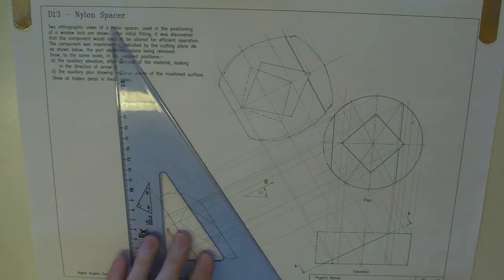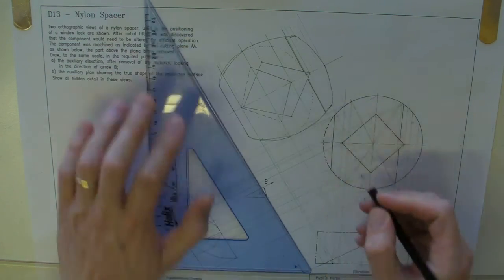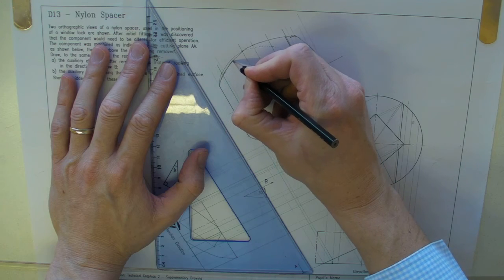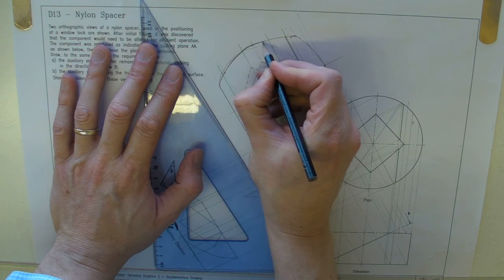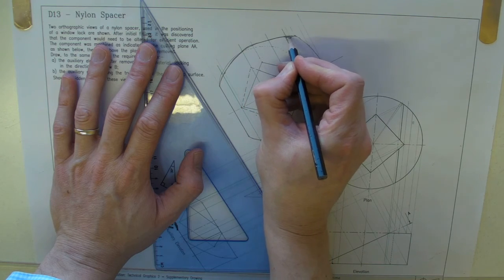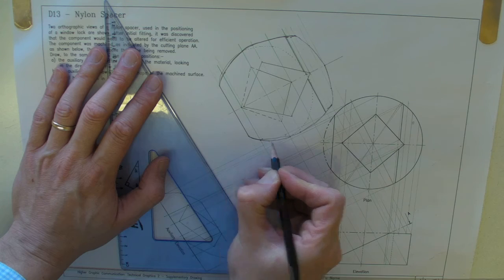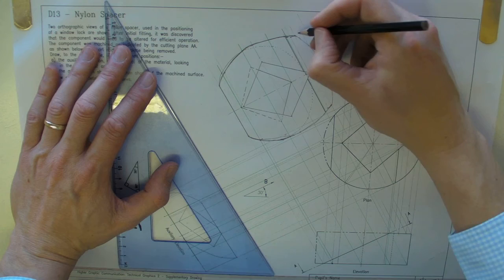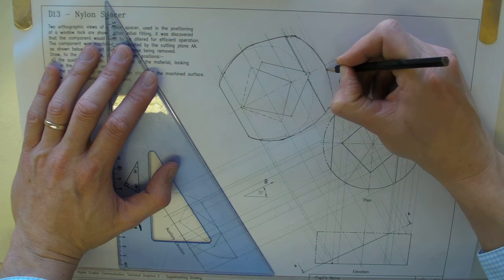I would obviously take a wee bit of time and just go over some lines, and just make it as dark as I can, just to finish it off. And make it look as good as I can. I wouldn't be rubbing out my construction lines, I would just be making sure that it was clear the difference between the construction lines and the final lines.